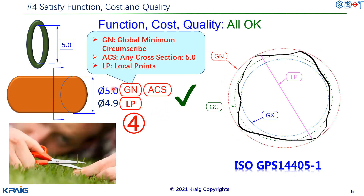So we separately specify the upper limit and the lower limit. For the upper limit, we apply GN and ACS as explained. For the lower limit, we use LP — the two-point measurement — meaning the lower limit of 4.9 is verified by two-point measurement. Now the quality is properly controlled: the worst material point is controlled by two-point, and the maximum size is controlled by the external circumscribed diameter at any cross-section.